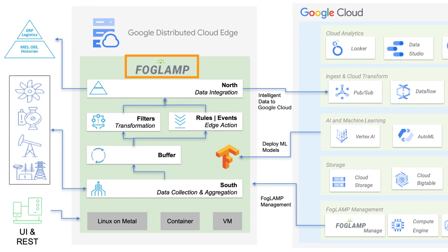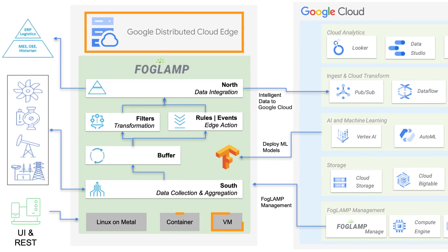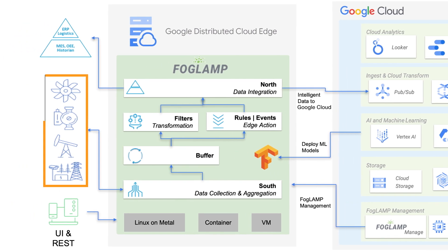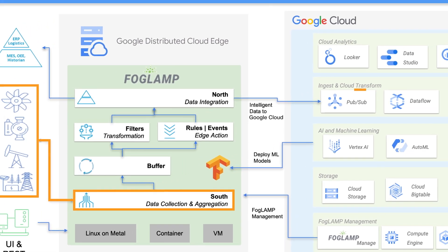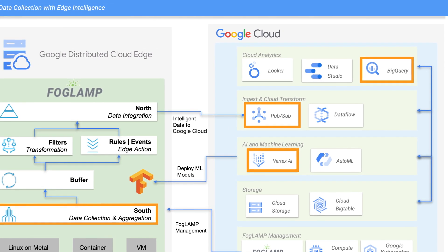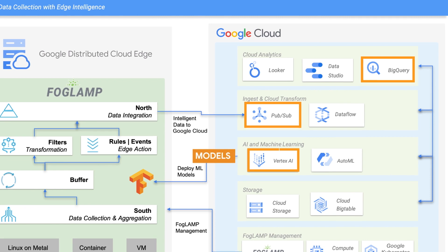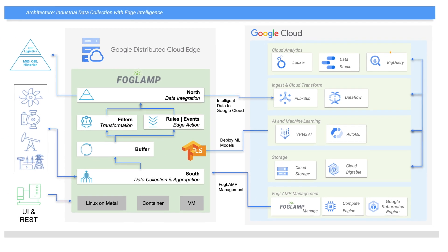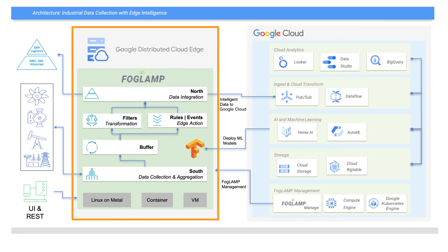FogLamp operates on the edge, on bare metal, virtual machines or containers. Google Distributed Cloud Edge is ideal for this kind of application. FogLamp collects, labels and integrates machine data with Google Cloud's PubSub, BigQuery and Vertex, where machine learning models are built. The resulting models are distributed and executed in FogLamp applications on Google Distributed Cloud Edge.